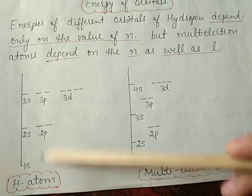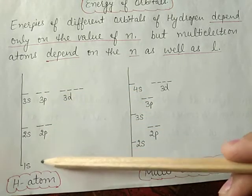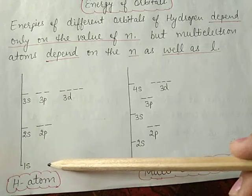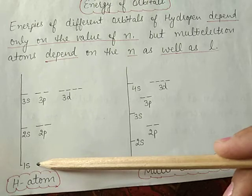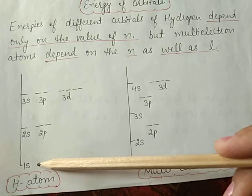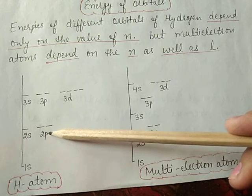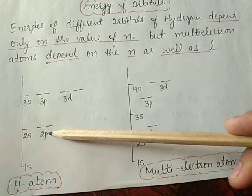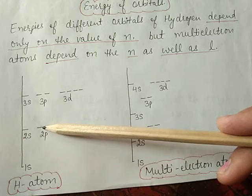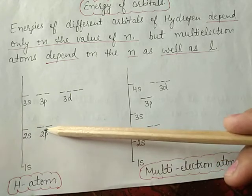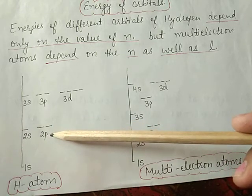The electrons residing in these orbitals show lower energy and are most strongly held by the nucleus. If the electron is present in the 2s, 2p, or higher energy orbitals in a hydrogen atom, it is called the excited state. This is an unstable state which is not possible under ordinary conditions.